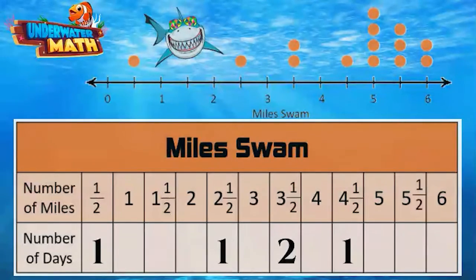Four dots above the five mile mark. I swam five miles on four days, and three dots above the five and a half mile mark. So I swam five and a half miles on three days. And last, you swam six miles on two days.